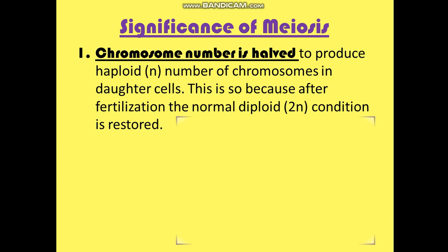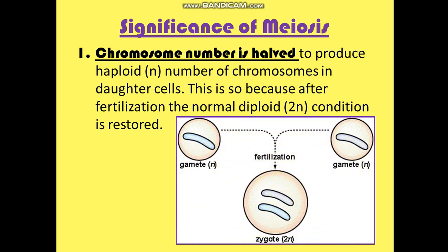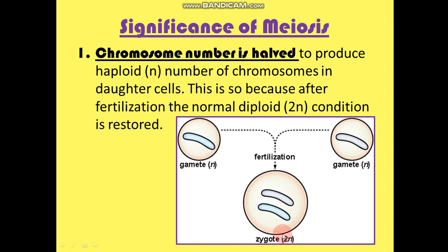You can see from this diagram: gamete 1, which is n, is haploid having n number of chromosomes. The female gamete is also haploid, having n number of chromosomes. When fertilization takes place, the normal diploid condition — 2n number of chromosomes — is restored. So for fertilization to occur, it is necessary that haploid number of chromosomes are present in both cells, so that when they combine, normalcy is attained.